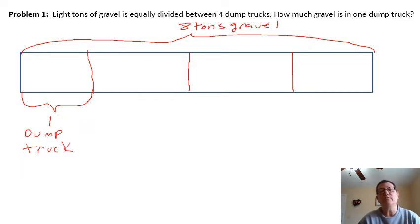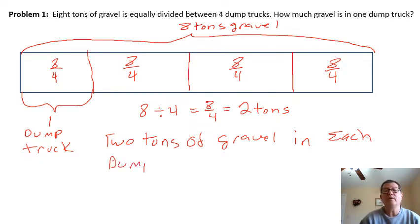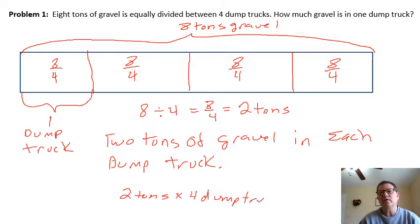As we can see from the drawing, we want to know how much is in one dump truck. So we have eight tons divided by four dump trucks, which equals eight-fourths. We know each one will be eight-fourths tons. Eight divided by four gives us two tons. So we would have two tons of gravel in each dump truck. To check, I divided to find it. So if I took two tons times four dump trucks, that would equal eight tons. So it checks.